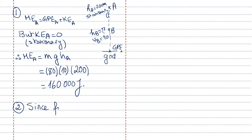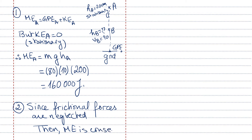Mechanical energy is conserved between A and B because frictional forces are neglected as given. To show that height of B is 120 meters: since ME is conserved, ME at B equals ME at A equals 160,000 joules. At B we have both GPE and KE, so mechanical energy at B equals mghB plus half mv at B squared.